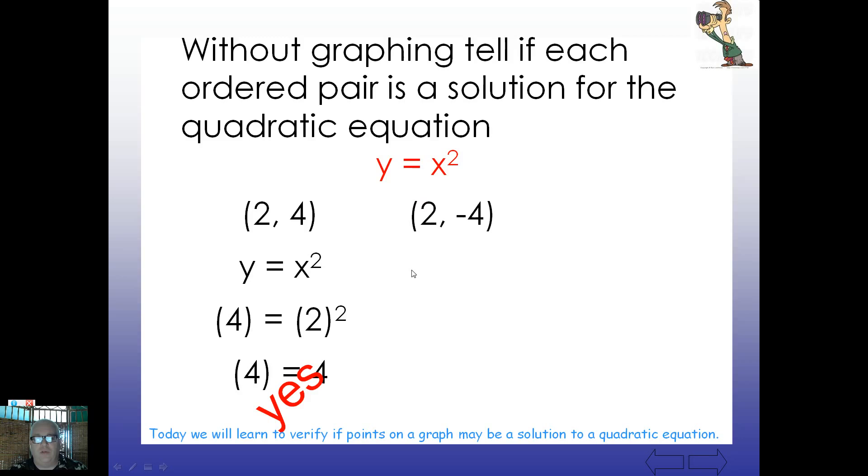How about this one? Two, negative four. So again, plug this in for x and this in for y. Is it true that negative four is equal to two squared? Well, by now we probably realize if you square any non-zero number, you're going to get a positive value, never a negative. So in this case, no, negative four is not equal to four.